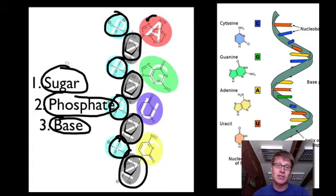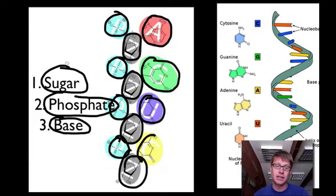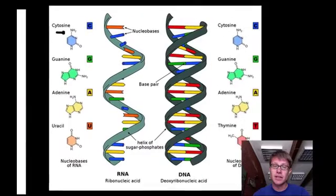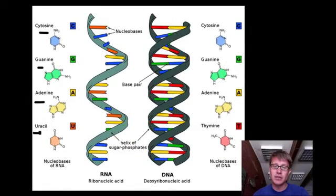What goes off the inside, attached to the sugar, is going to be the base, or the nitrogenous base. And so in RNA, it's adenine, guanine, uracil, and cytosine. So we've got cytosine, guanine, adenine, and uracil.